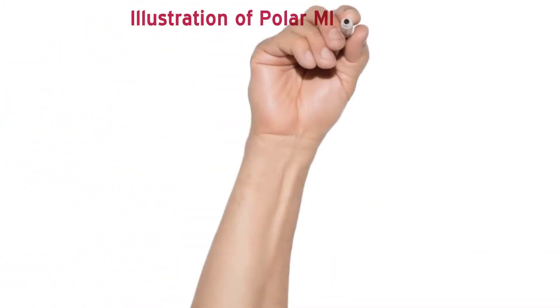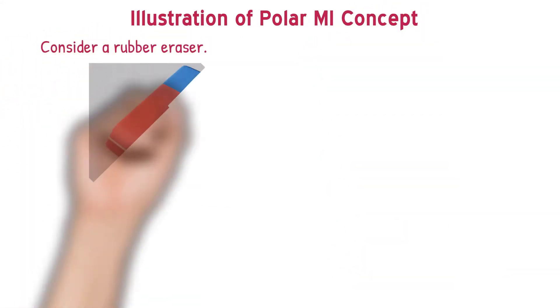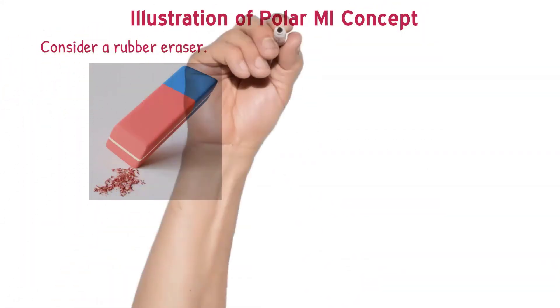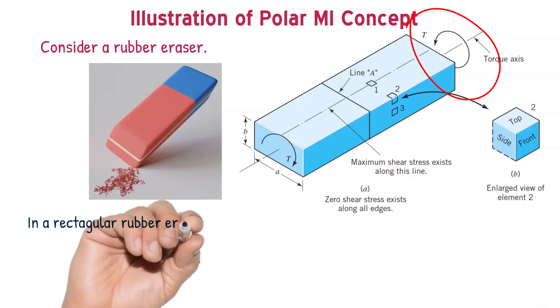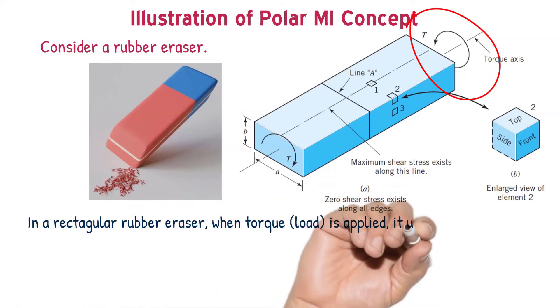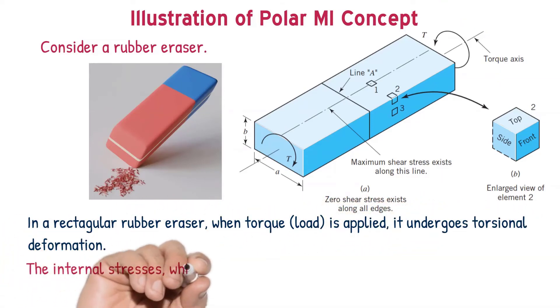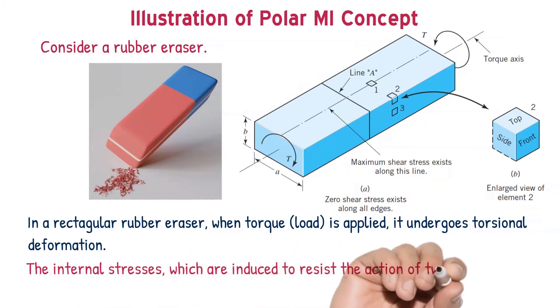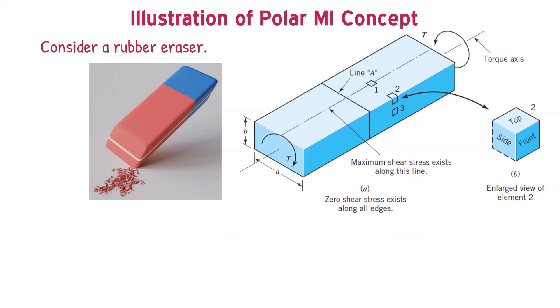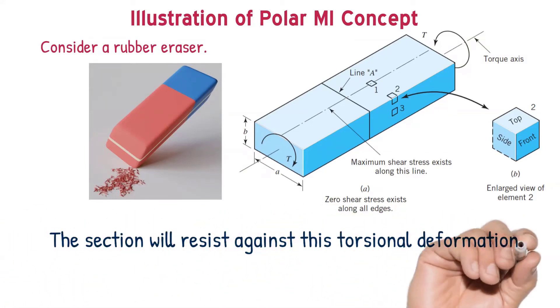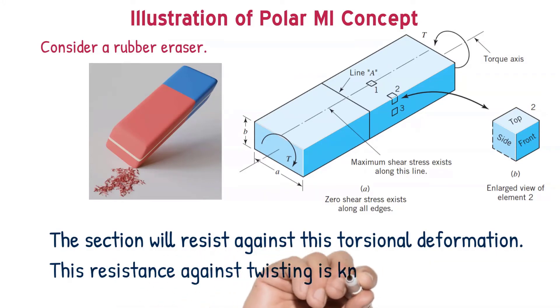Now, let us understand the physical significance of polar moment of inertia. Let us consider a rubber eraser as an object. When we apply an external torque over it, it will undergo twisting, it will undergo torsional deformation. During the process, there will be internal stresses created which are known as torsional shear stresses. Naturally, the section will offer resistance against this torsional deformation. The resistance against twisting is known as polar moment of inertia.